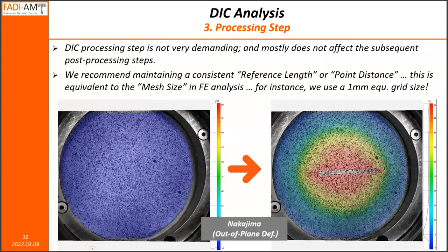The DIC processing step itself is not really demanding. Any DIC software should be able to do this step — just correlating the images and giving you nice surface strain maps. The only thing we would like to add is that if you would like to be consistent, we recommend maintaining a fixed good number for the reference length or the point distance, whatever it's called depending on your software. In essence, what we're talking about is the equivalent to the mesh size in finite element analysis. For us, we've been using something close to one millimeter — that's a very nice mesh size, not too fine and not too coarse.